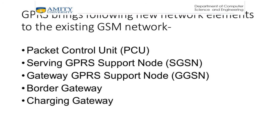The Serving GPRS Support Node (SGSN) is the most important element of the GPRS network — it is equivalent to the MSC of the GSM network. There must be at least one SGSN in the GPRS network, similar to having at least one MSC in GSM. There is a coverage area associated with each SGSN, and as the network expands and subscriber numbers increase, there may be more than one SGSN in a network.